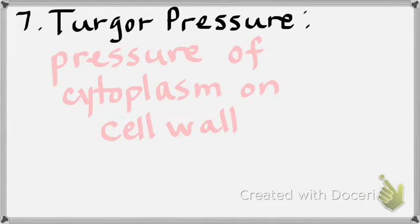Question eight is easy: why would you predict that an animal cell but not a plant cell might burst when placed in a hypotonic environment? It's the lack of a cell wall. Animals don't have a cell wall, so they're going to swell and pop.